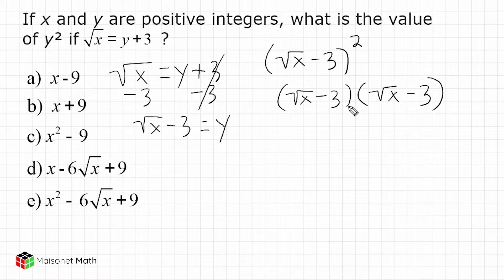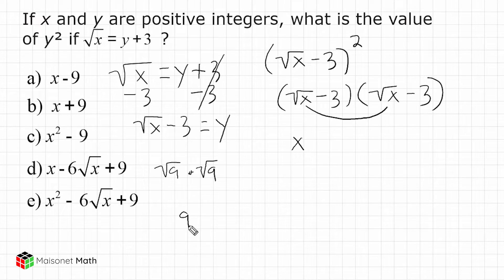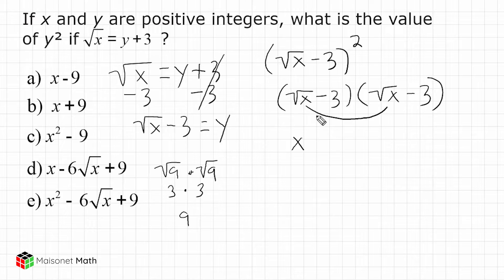We are going to multiply the first two terms together: the square root of x times the square root of x, which equals x. Whenever you're multiplying something under the radical by itself, all you do is remove the radical and write what's underneath one time. For example, the square root of 9 times the square root of 9 equals 9 — since the square root of 9 is 3 and 3 times 3 is 9. Therefore, the square root of x times the square root of x is just x.